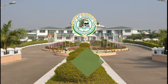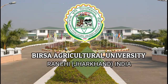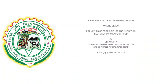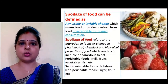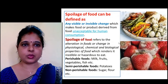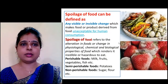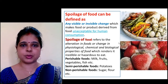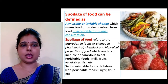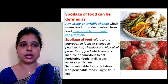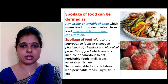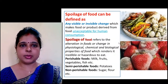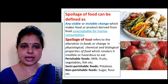In principles of food science and nutrition, food spoilage is defined as any visible or invisible change which makes food or products derived from food unacceptable for human consumption. It can also be defined as the alteration in the physiological, chemical, and biological properties of food which makes the food hazardous to eat. On the basis of quality, food can be classified into three categories.